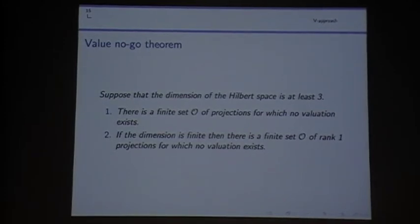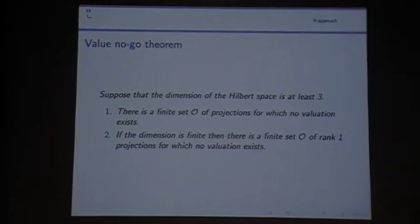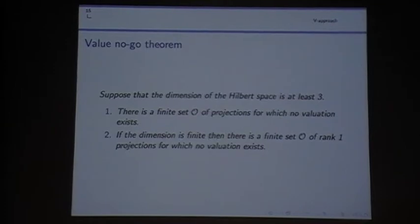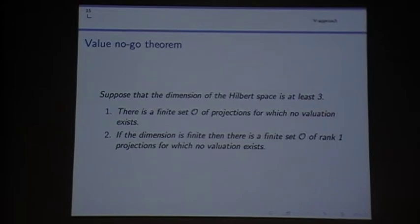So this is the classical value no-go theorem. The dimension should be at least three. And then in the finite dimensional case you have a no-go theorem which uses only rank one projections. In general this is not true. It is not that we can prove, we just know that this is not true. You have to use more general projections.